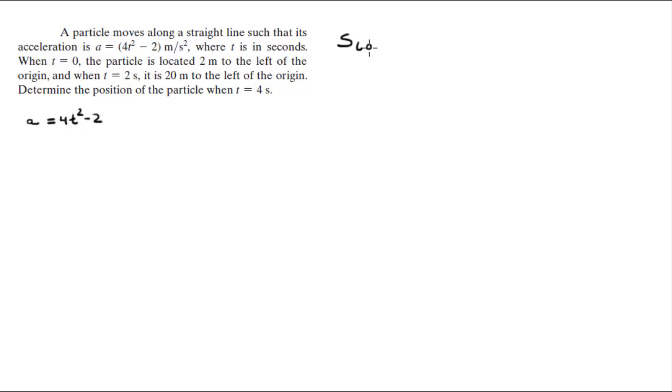So this is telling us s of 0 is equal to minus 2 because it says to the left of the origin, and s of 2 is equal to minus 20. This is important.